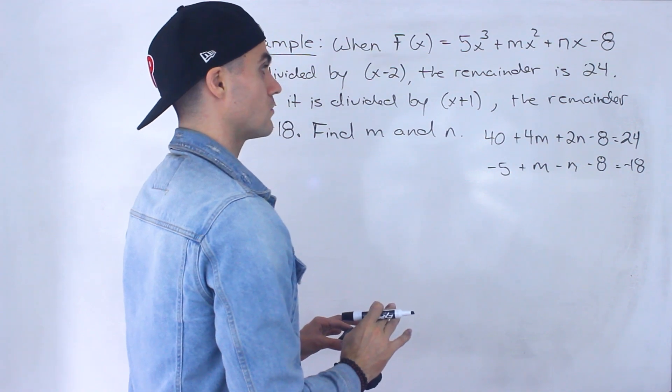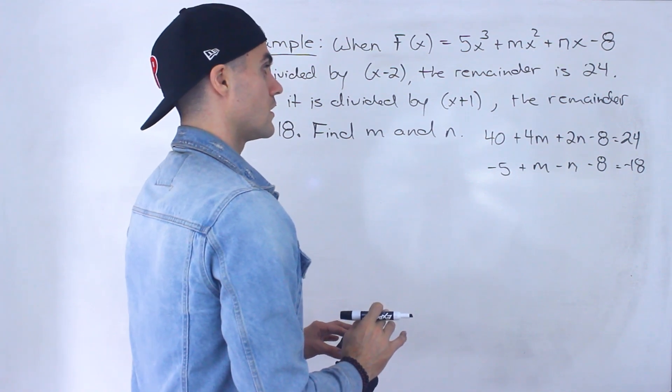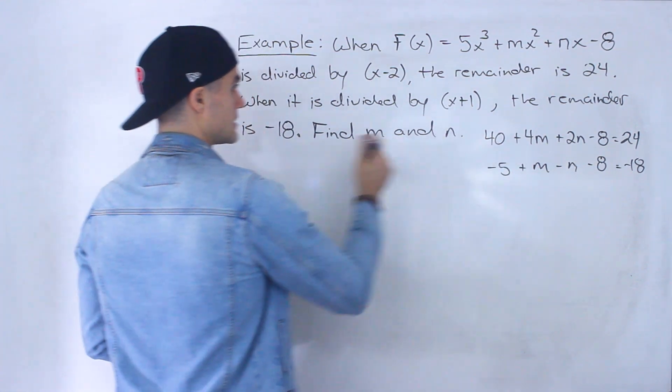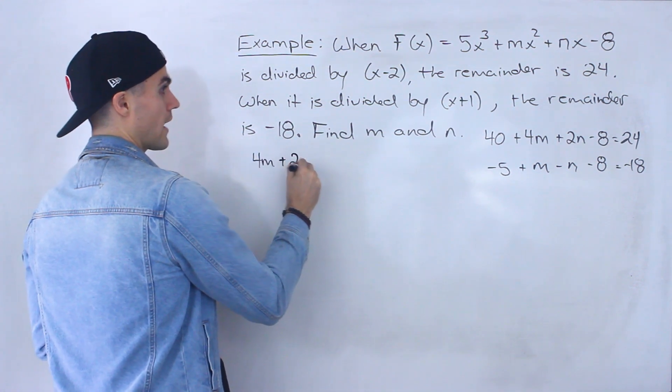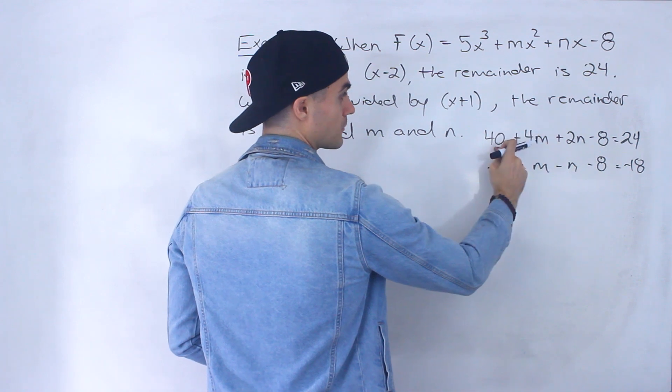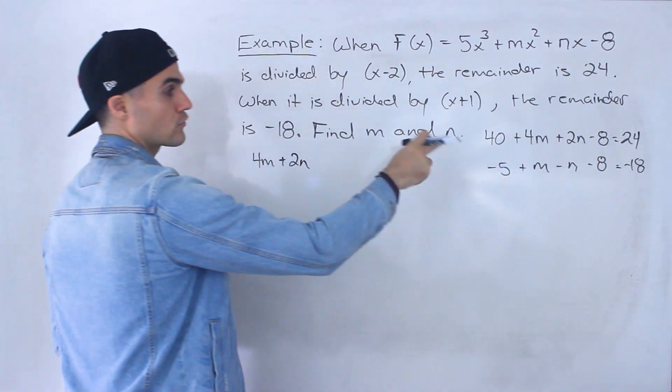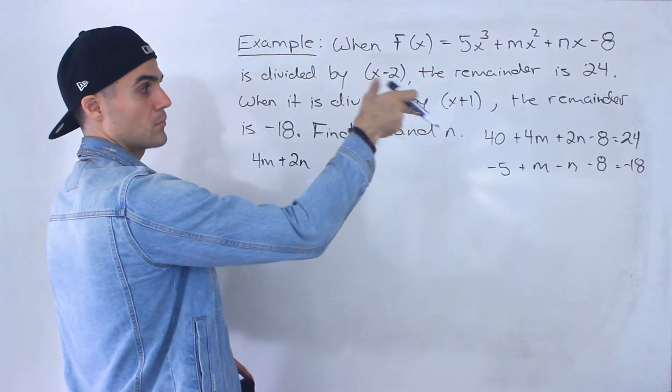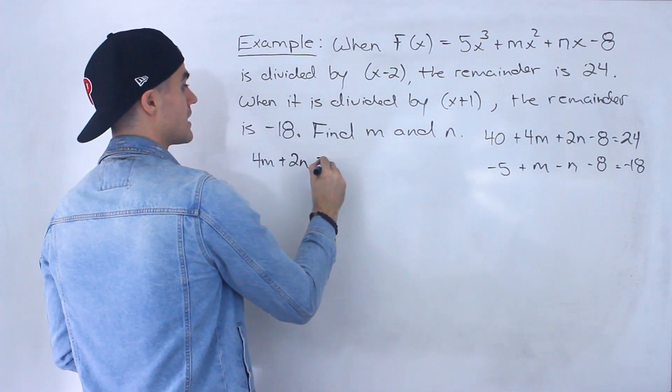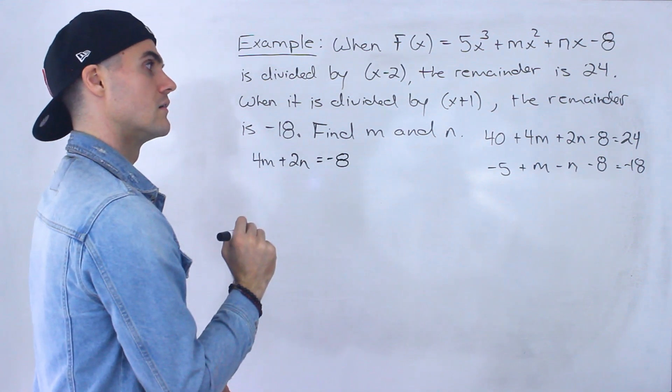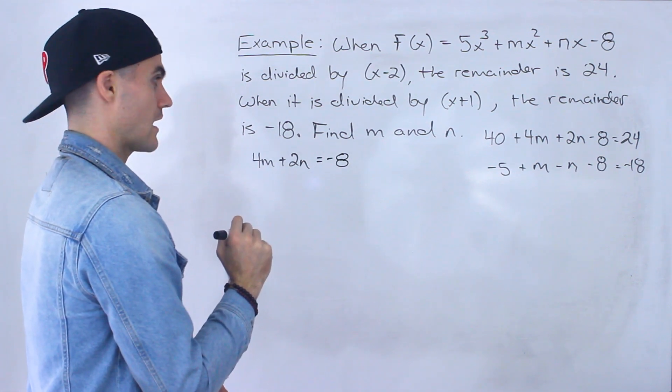So I'm first going to simplify this. So what I'm going to do is I'm going to rewrite it here. So I'm going to have 4m + 2n. I'm going to keep these on the left side, then I'm going to bring the 40 over and then the negative 8 over. So negative 8 goes over positive 8. That would be 32 minus 40 would give us negative 8.